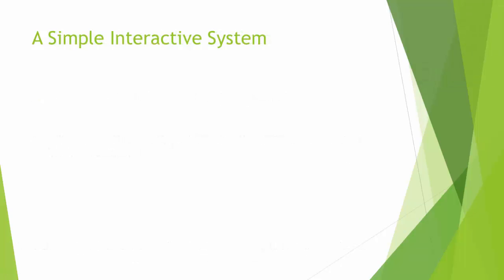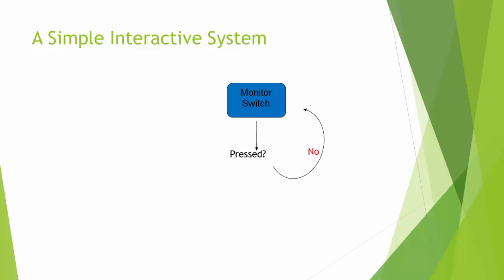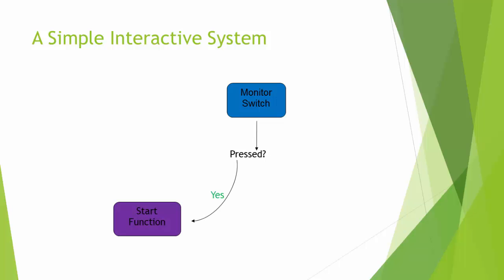Before we go any further, let's illustrate a simple interactive system. We'll get a good sense of how the loops work if we look at a flow chart. We can set up a loop in our Arduino that monitors a switch — it checks to see if a button has been pressed. If that button has been pressed, it can do something. If it hasn't, it just goes back to monitoring again. As soon as it has been pressed, that's when it can go do something exciting and start a function.